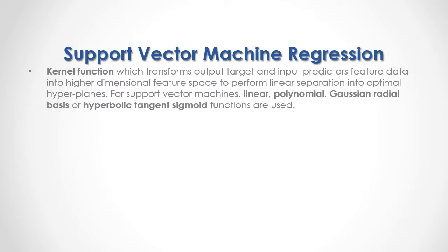Support vector machines have the following characteristics. First, a kernel function, which transforms output target and input predictor features data into a higher dimensional feature space to perform linear separation in optimal hyperplanes. For support vector machines, linear, polynomial, Gaussian radial basis, or hyperbolic tangent sigmoid functions are used.